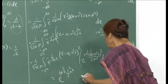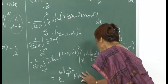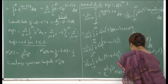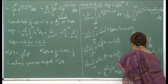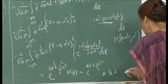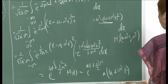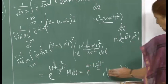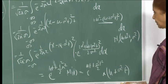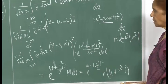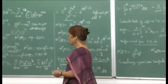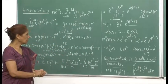Differentiating M_x(t) = e^{μt + σ²t²/2}: the first derivative is (μ + σ²t) e^{μt + σ²t²/2}, which at t = 0 gives μ = E[x]. Differentiating again and evaluating at t = 0 gives E[x²], from which you can compute the variance. This illustrates the concept of the MGF and how you make use of it; by looking at its form you can identify the distribution and its parameters.